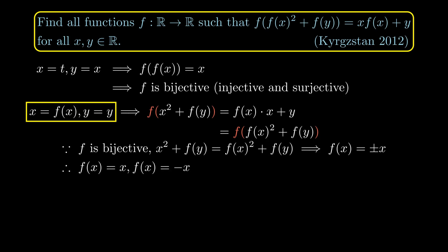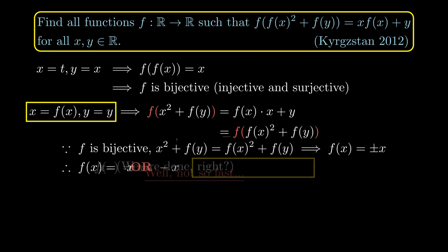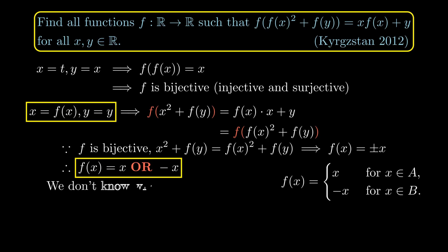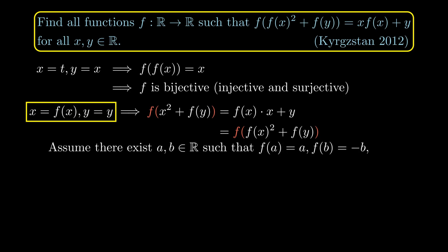We can conclude f(x) = x and f(x) = -x are the only solutions — but not so fast. The problem is we only know f(x) could be x or -x pointwise, meaning x can be mapped to x for some values and to -x for others. We don't yet know whether f can change its sign. This is a common trap in solving functional equations, sometimes called the pointwise trap. To resolve it, assume there exist real numbers a and b such that f(a) = a and f(b) = -b.